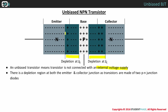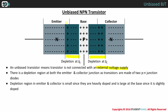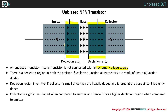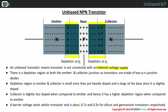The depletion region at the emitter and collector is small since they are heavily doped, and is large at the base since it is lightly doped. Collector is slightly less doped when compared to emitter, and hence it has a higher depletion region when compared to emitter. Barrier voltage exists within transistors and is about 0.7 volts and 0.3 volts for silicon and germanium transistors respectively.